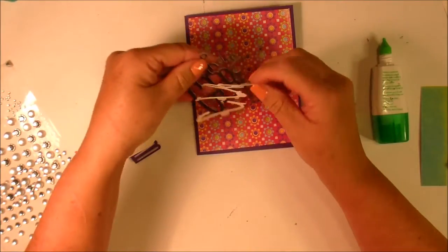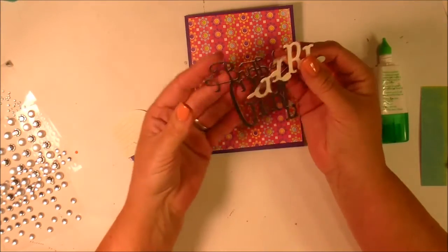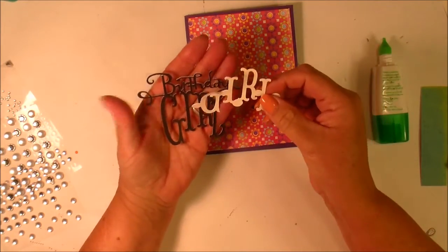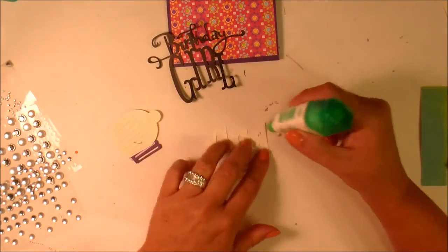I came across this cute little die cut on the Cricut Design Space from Storybook. It says Birthday Girl. I cut the bottom layer in black and then the girl color in a cream-colored cardstock.